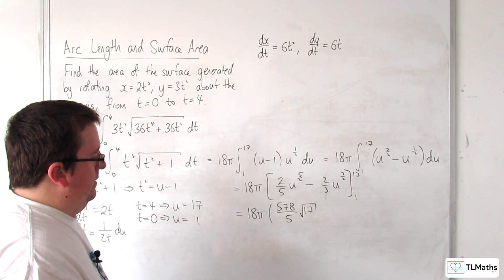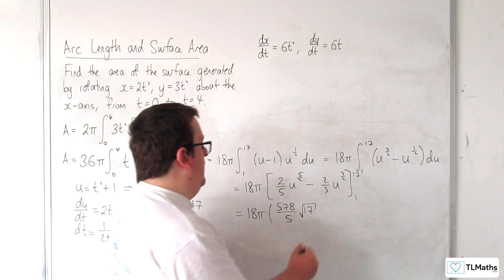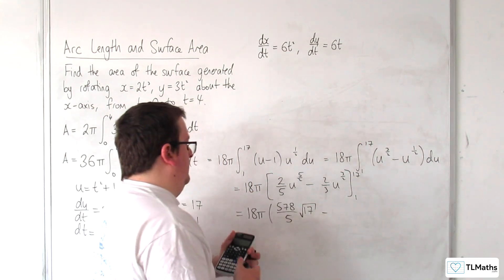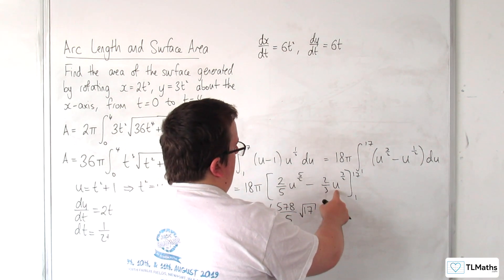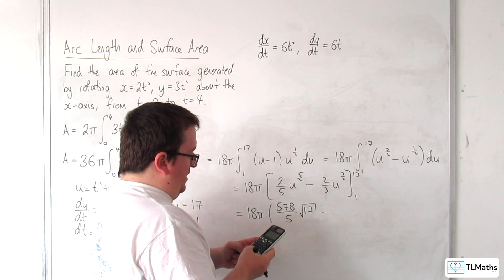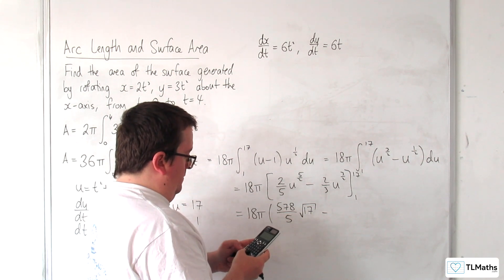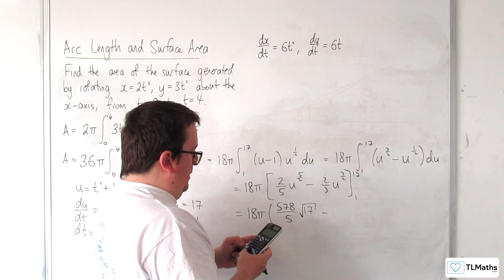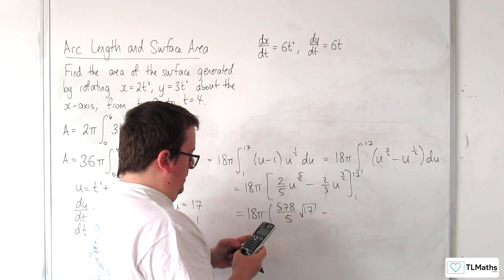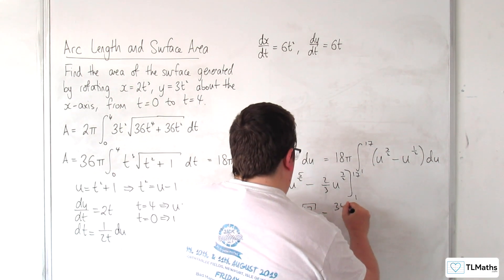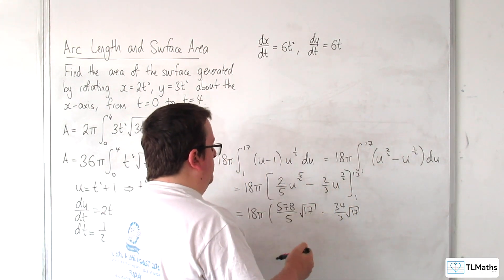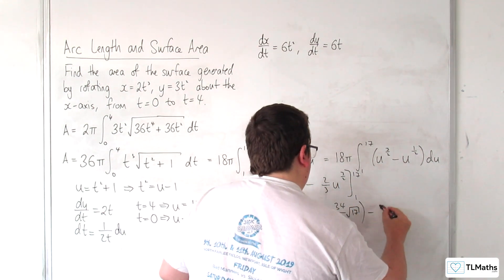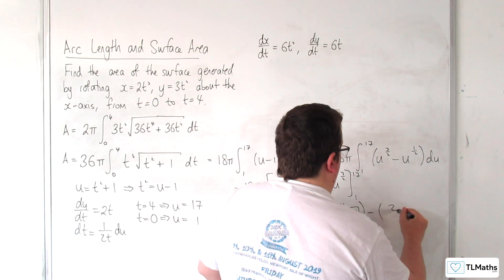Okay, take away 2 thirds, so we've got the root 17 cubed, which is going to be 17 root 17, times that by 2 thirds, so 34 thirds root 17. So that's substituting the root 17, now substituting the 1, we're going to have 2 fifths, take away 2 thirds.